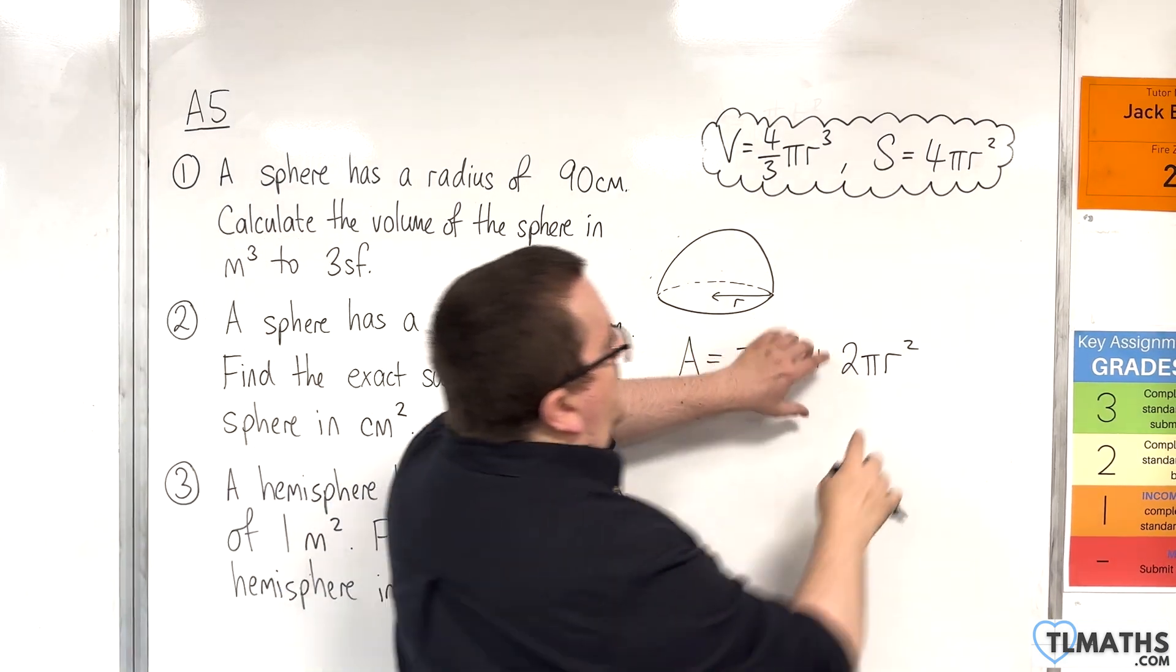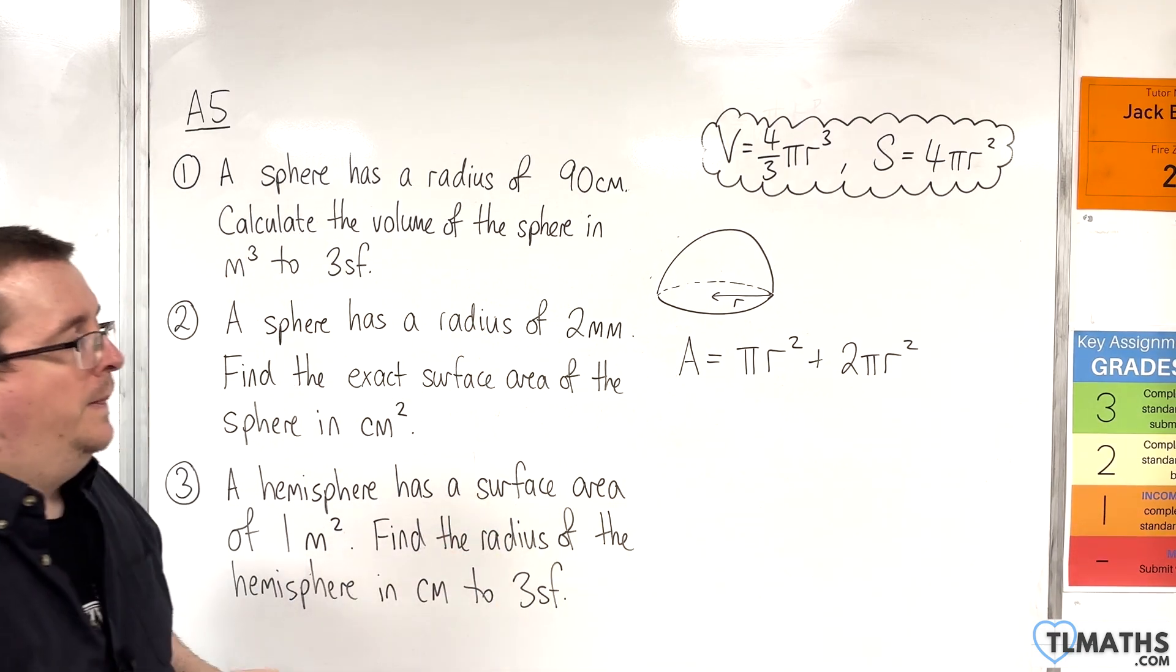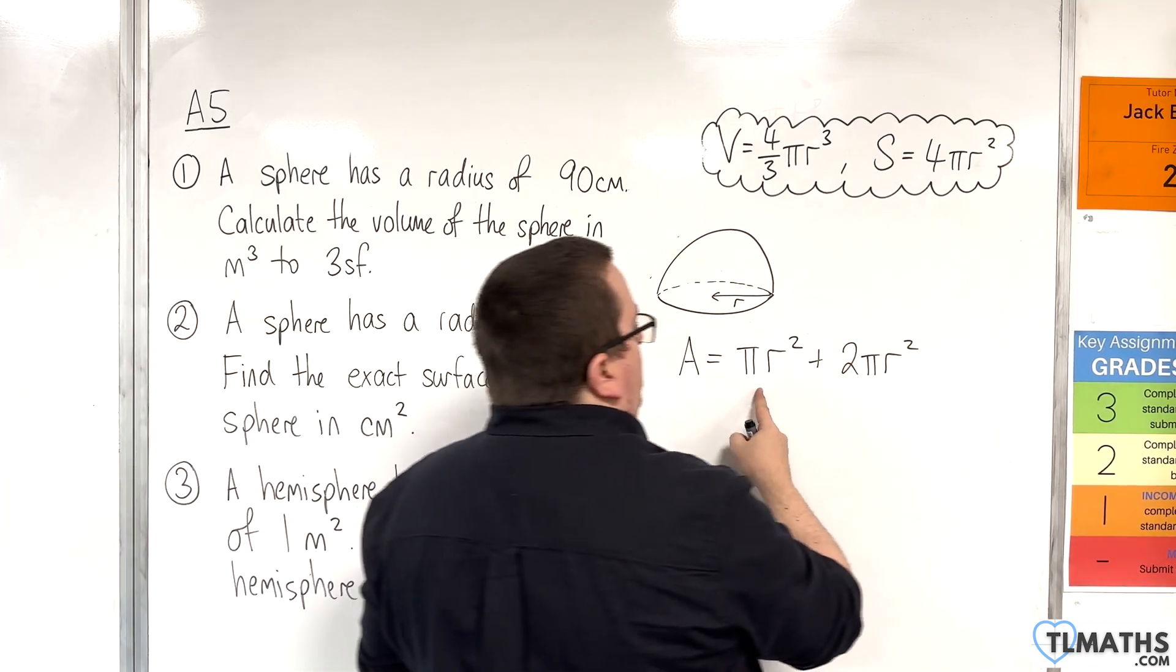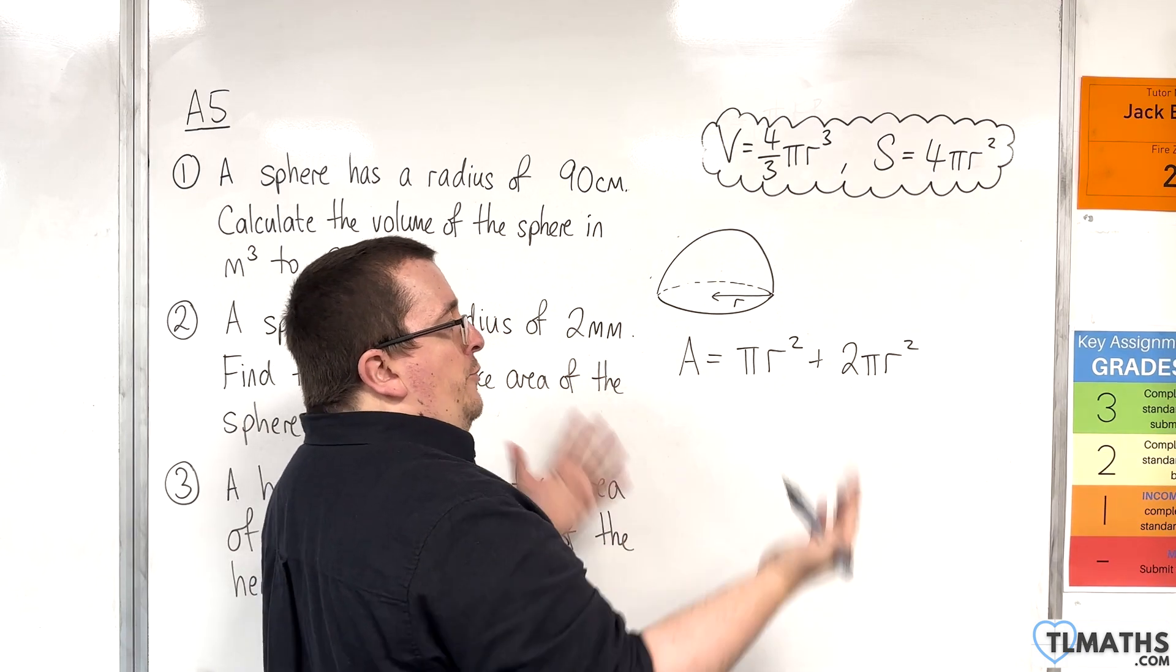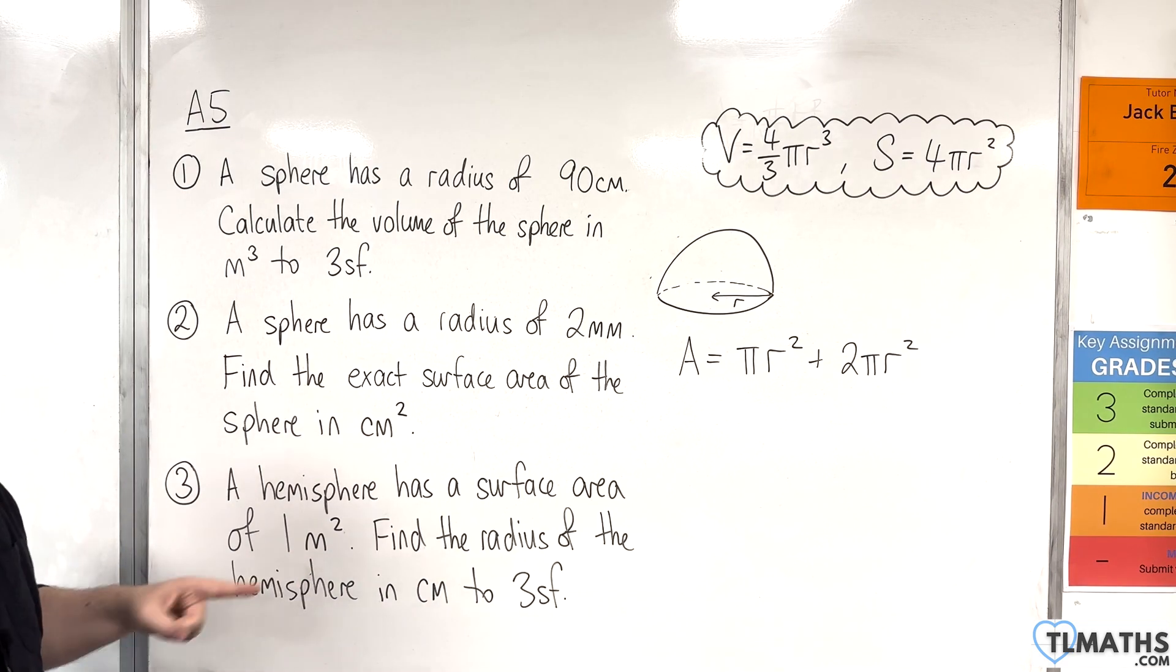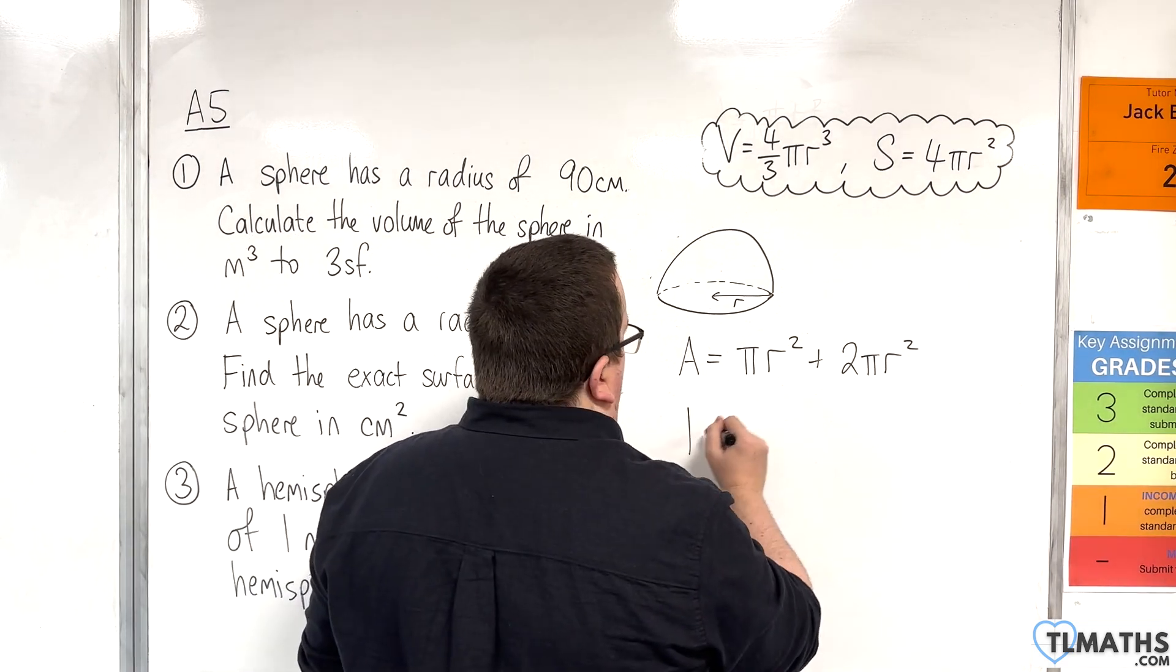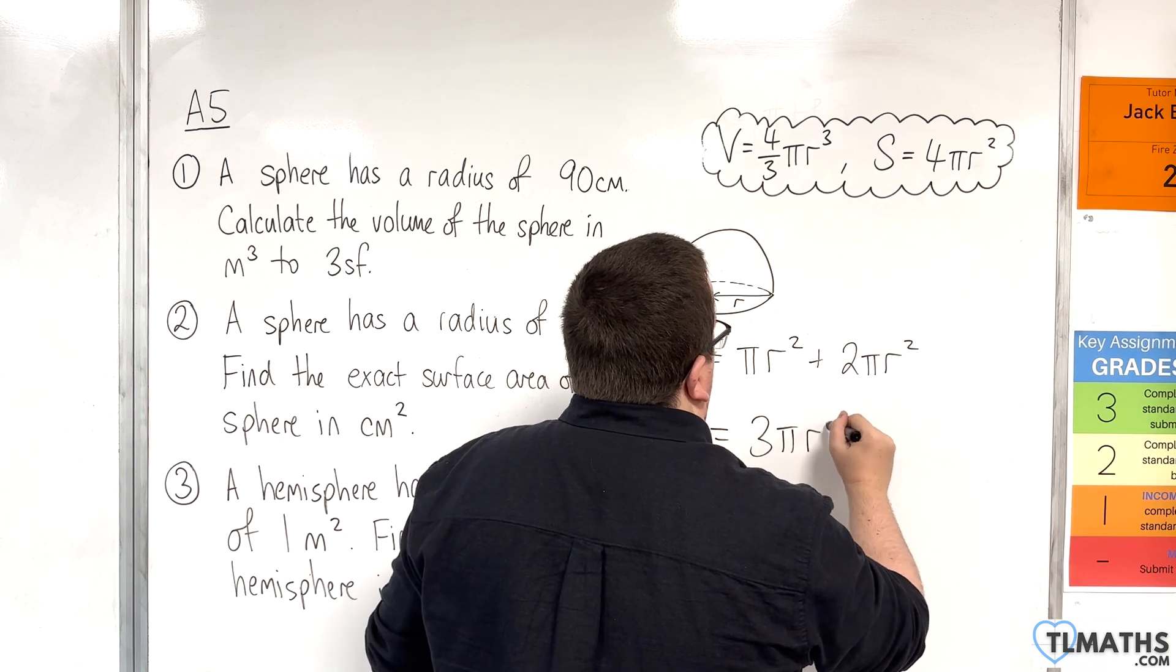OK, so that is coming from half of the overall sphere. So we've got a pi r squared plus a 2 pi r squared. So that means in total we've got 3 pi r squared. And we know what the area has got to be. It's got to be 1. So 1 has got to be 3 pi r squared.